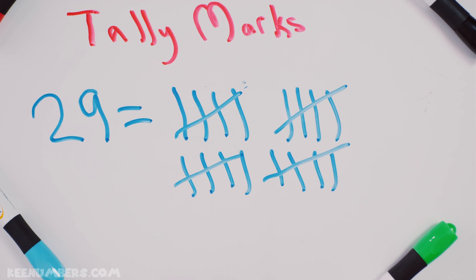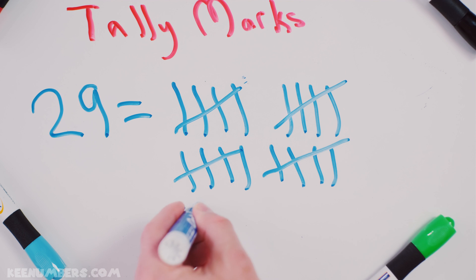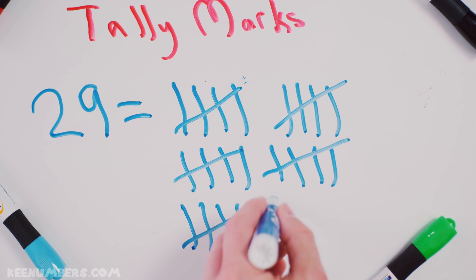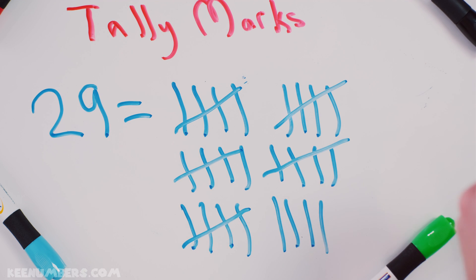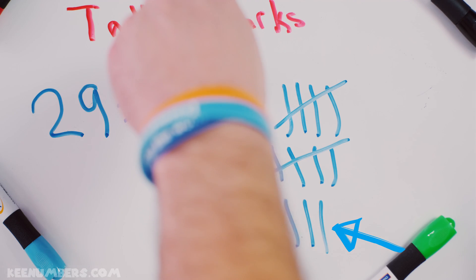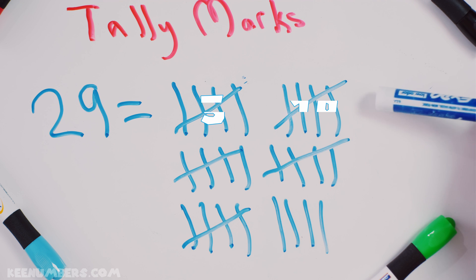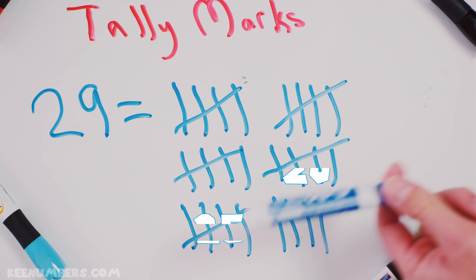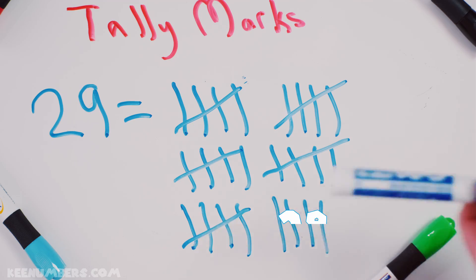And then you slide the board up so you can see. You're going to get to 25 pretty quickly, and then you're going to add 4 more to make 29. So again, you got 5, 10, 15, 20, 25, and then you add 4 more — 29.